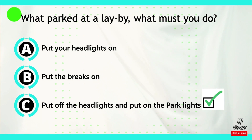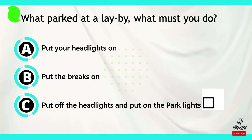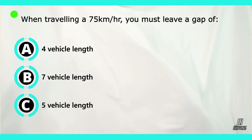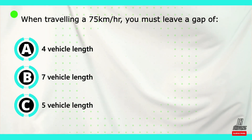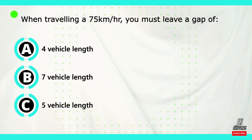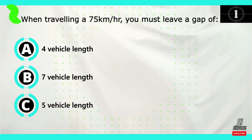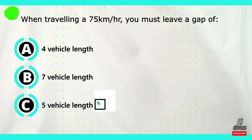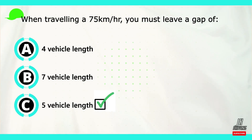Question number eight: when traveling at 75 kilometers per hour, I must leave a gap of — option A: four vehicle lengths, option B: seven vehicle lengths, or option C: five vehicle lengths. The correct answer is C — when traveling at 75 kilometers per hour, you must leave a gap of five vehicle lengths.